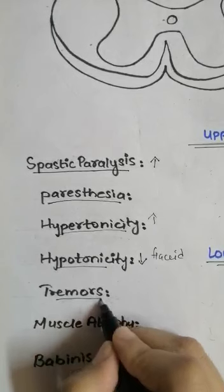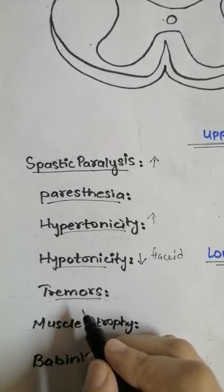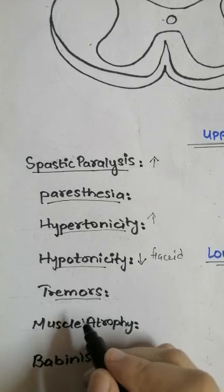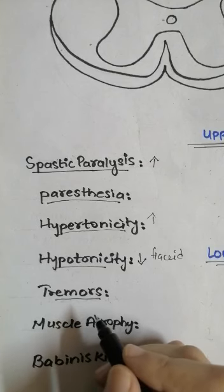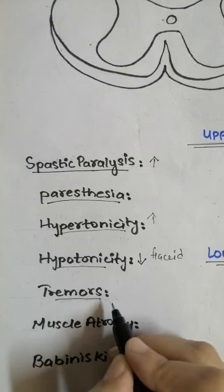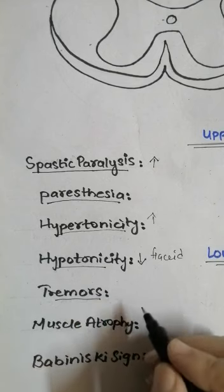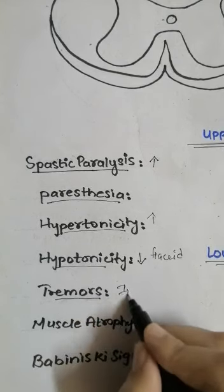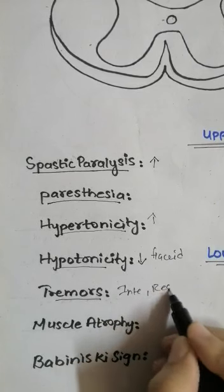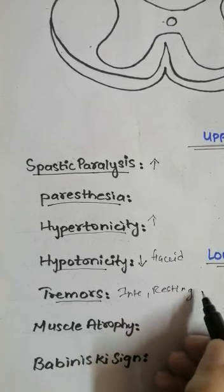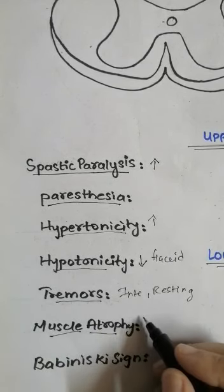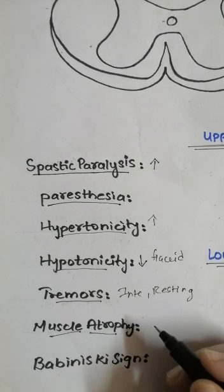Then there are tremors. Tremors are the to-and-fro movement — irregular and involuntary — of the agonist and antagonistic muscle groups. Different muscle groups work in opposite directions and there are involuntary rhythmic contractions. These are called tremors. They can be intentional tremors or resting tremors, as seen in Parkinson's disease. Then muscle atrophy is simply the wasting or denervation of a muscle.